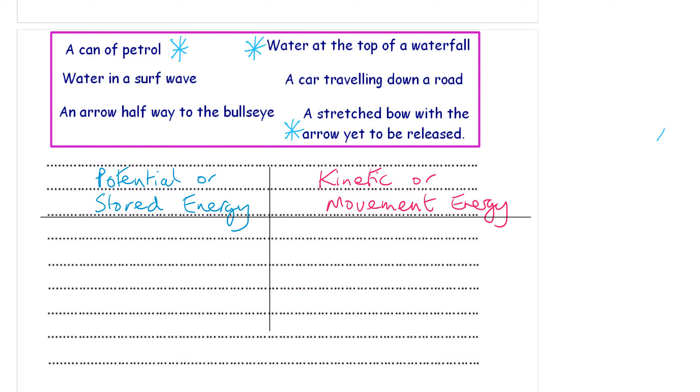Water in a surf wave is moving. It's got kinetic energy. That'll be in the right hand column. An arrow halfway to the bullseye is also moving at high speed, it's got kinetic energy. And a car traveling down the road also has kinetic energy.